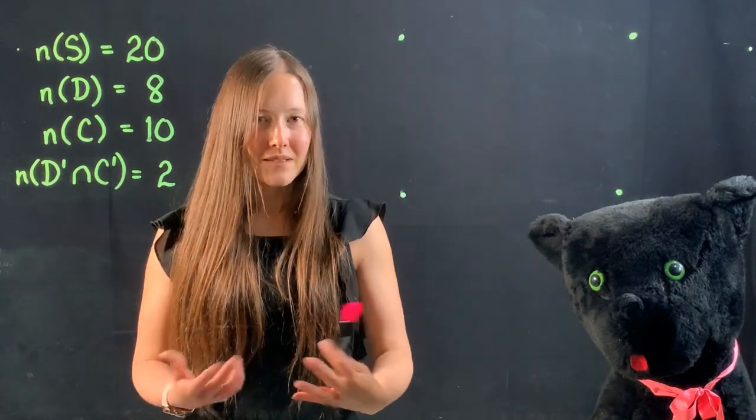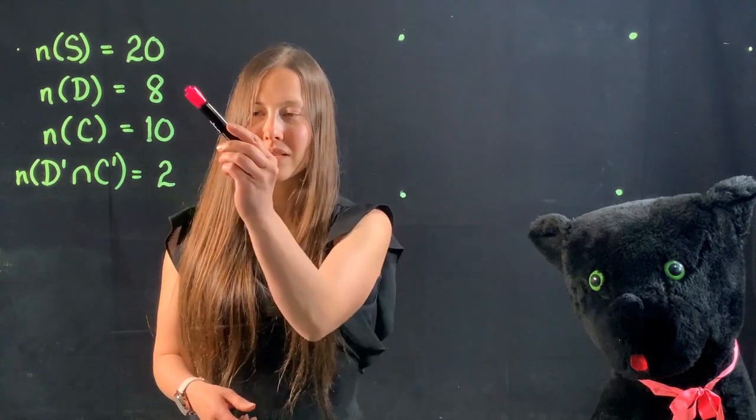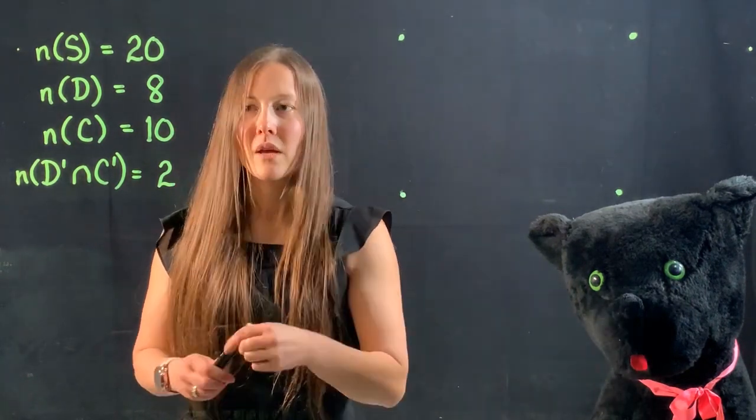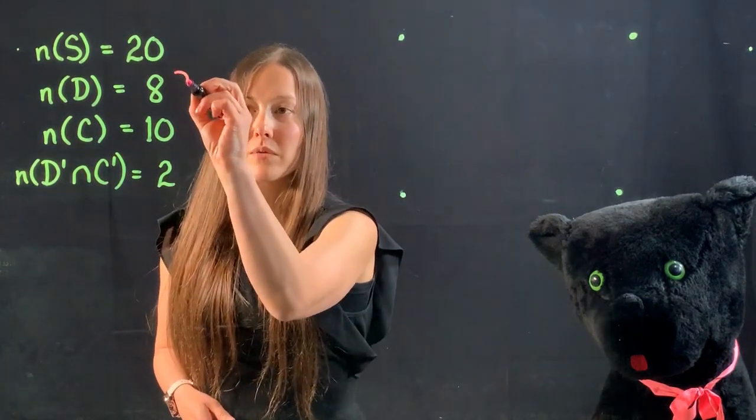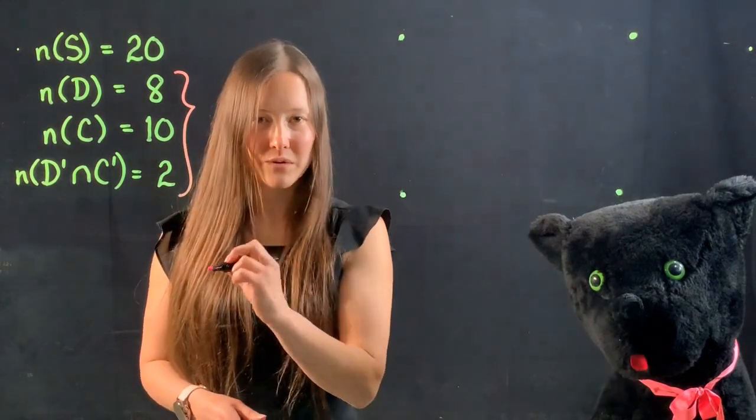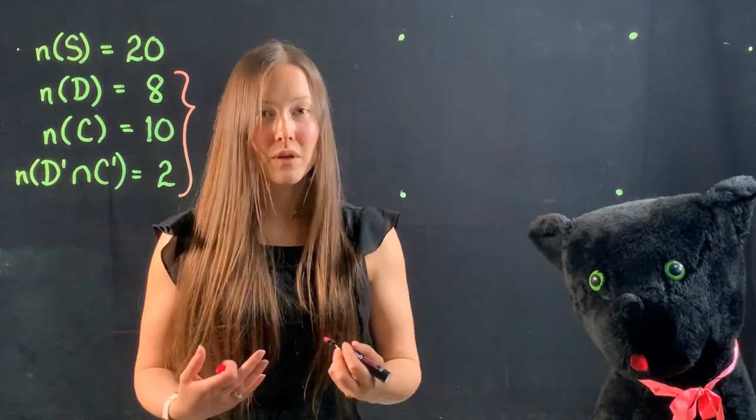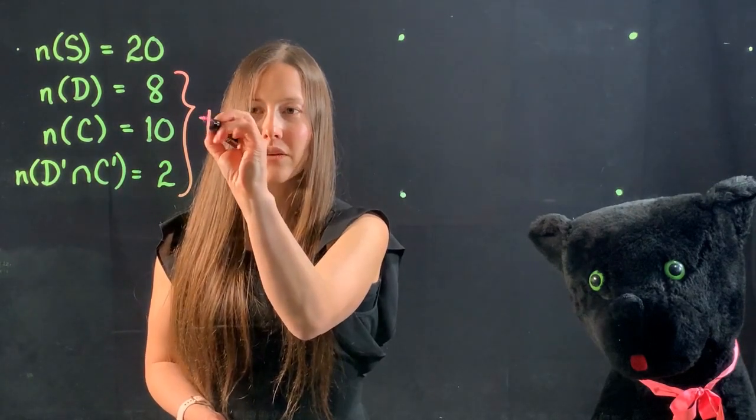What we're going to do is check what do these numbers add up to. Meaning the number that own the dogs, the number that own the cats, and the number that own neither. So let's add those together.